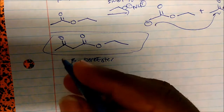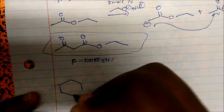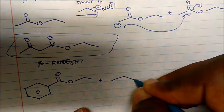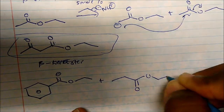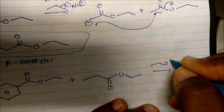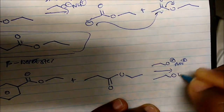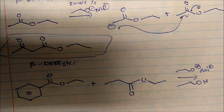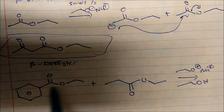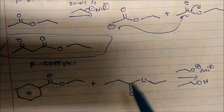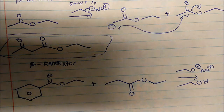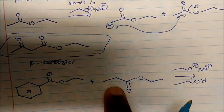The cross-Claisen condensation is the idea that we're taking two esters. We're taking two esters and crossing them. If I add sodium ethoxide and ethanol — the cross-Claisen says I'm taking two esters and crossing them, but one has to have no alpha hydrogens. So if you look, this ester has no alpha hydrogens. This is the only ester that has the alpha hydrogens. That's the Claisen cross condensation where I'm taking two esters and crossing them, but one has no alpha hydrogens.